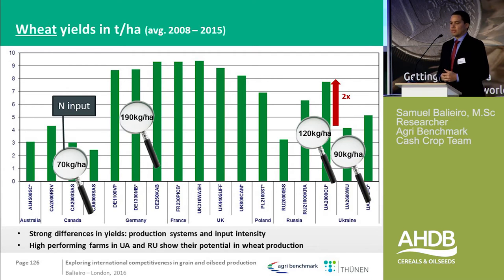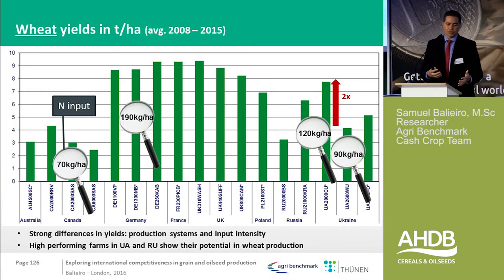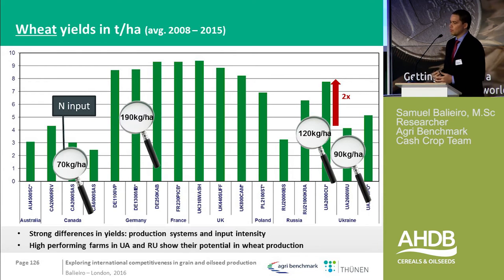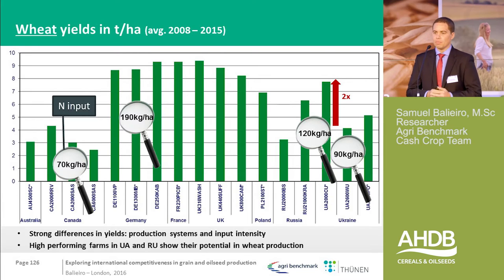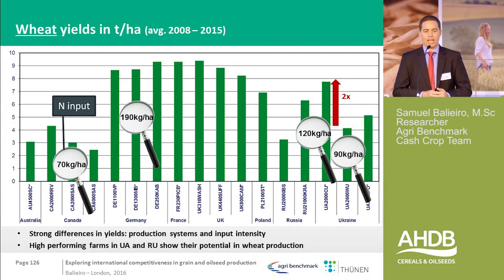The good thing about having a benchmark is that you can try to explain why. Here we also have nitrogen input per hectare — European and German farms are much more intensive and use more inputs, whereas in Canada and Australia you have much lower use of nitrogen. Russia and Ukraine is always more complex. There is a very big difference in types of farms — for instance, the 21,000 hectare Russian farm is an agroholding with western-type management, achieving yields of six tons of wheat per hectare. So there is a very big range of farming types and differences in input use.